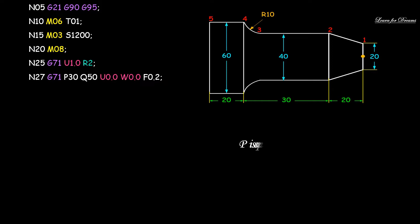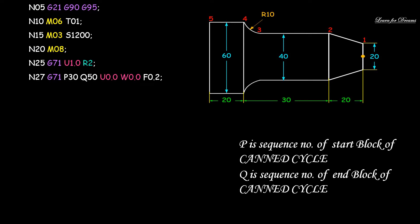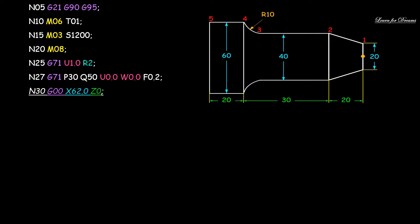N27 G71 P30 Q50 U0.0 W0.0 F0.2. P is sequence number of start block of canned cycle and Q is sequence number of end block of canned cycle. U and W are values for finish cut. So here I have written all the program rough cut, and finished cut value is 0, 0. Note carefully, our canned cycle will start at N30 and end at N50.